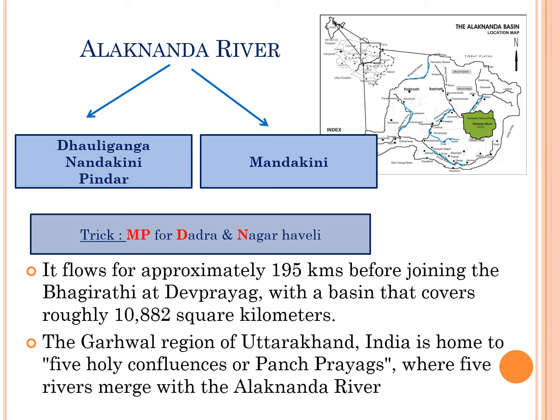The trick to remember the tributaries is 'MP for Dadra and Nagar Haveli', that is, Member of Parliament for Dadra and Nagar Haveli. The letters highlighted in red color represent the first letter of the river name.